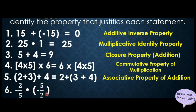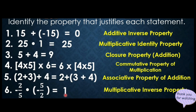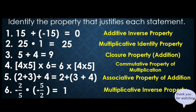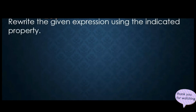Number 6: negative two-fifths times its reciprocal equals 1. That is multiplicative inverse property — when you multiply any number by its reciprocal, 2/5 is flipped to become 5/2, and the product is 1.